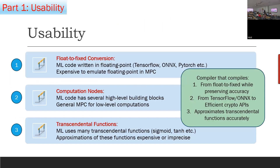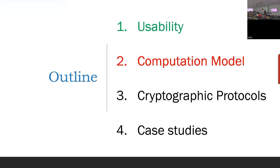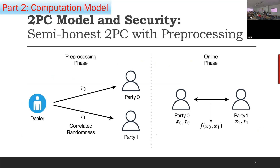We covered usability: we built a compiler that went from float to fixed while preserving accuracy. The compiler could directly work with TensorFlow or ONNX with no modifications, and we compiled that to efficient crypto APIs. We also approximated transcendental functions both accurately and efficiently. The computation model we were dealing with was semi-honest secure 2PC with pre-processing.